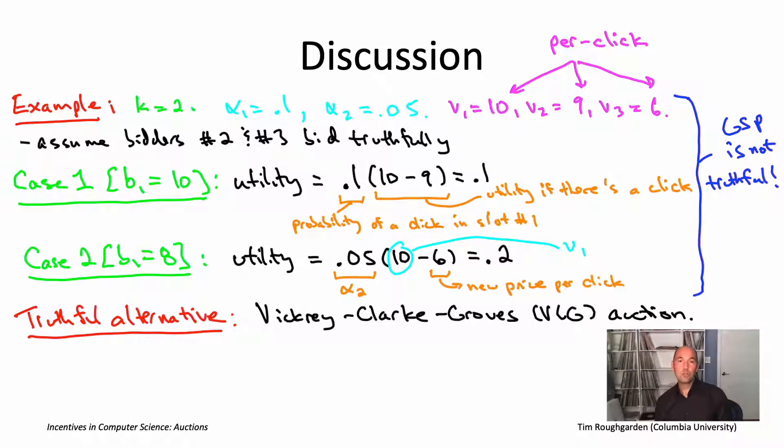The difference comes into the pricing rule. The VCG auction charges prices with a different formula than GSP, and as a result, it winds up being truthful, even though GSP was not. Basically, the idea is, in GSP, you just charge somebody the next highest bid. Whereas in VCG, you charge somebody a weighted average of all of the lower bids, where the coefficients in that weighted average depend on the click-through rates.